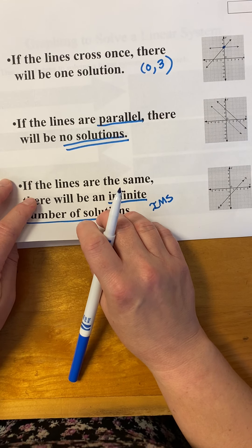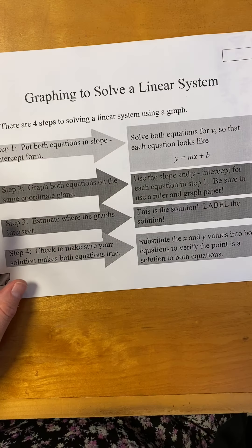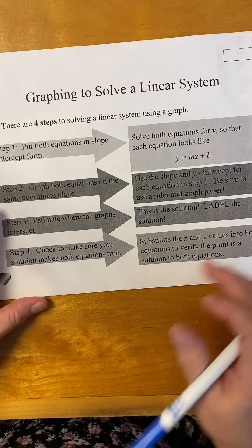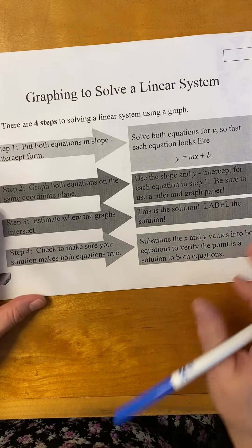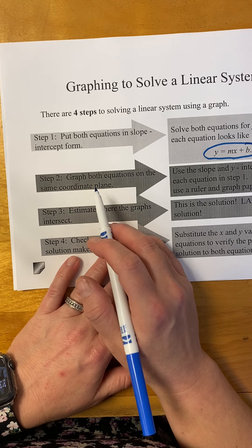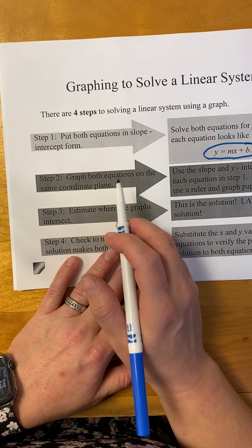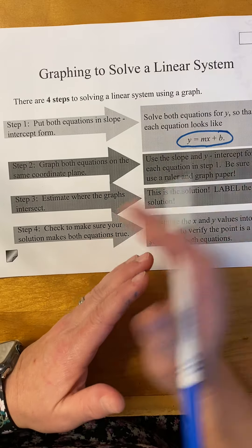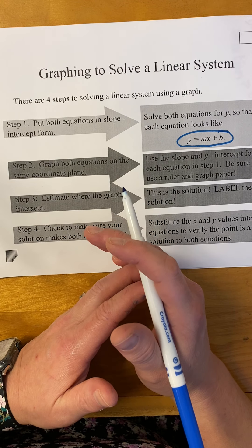So how do we graph a linear system? It's just like graphing a linear equation — you just do it more than once. The first thing you have to do is put both equations in slope-intercept form, which is y equals mx plus b. Then you're going to graph both equations on the same coordinate plane. To graph, you use the slope and y-intercept: put a point on the y-intercept first and then do rise over run to graph another point. Use a ruler though, because we're looking for where they intersect and it could be way later.